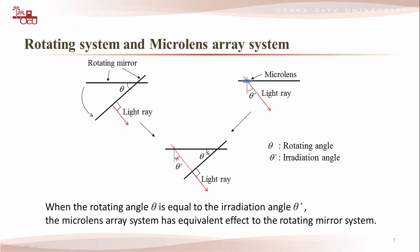The irradiation angle of the light ray from each micro-lens corresponds to the rotating angle of the rotating mirror. In other words, when n light rays are irradiated from each micro-lens at θ' by n-1 degree intervals, one basic display unit is equivalent to the rotating screen having rotation angle θ' degrees. When the rotating angle θ is equal to the irradiation angle θ', the micro-lens array system has an equivalent effect to the rotating mirror system.